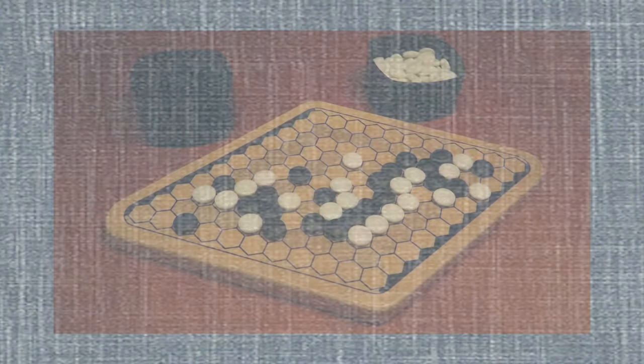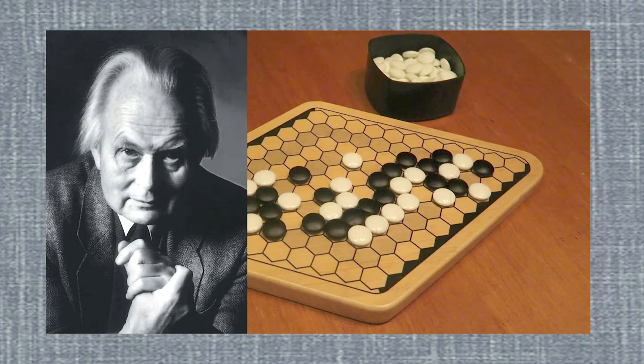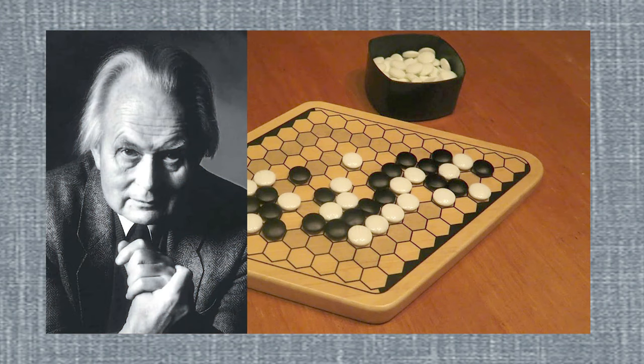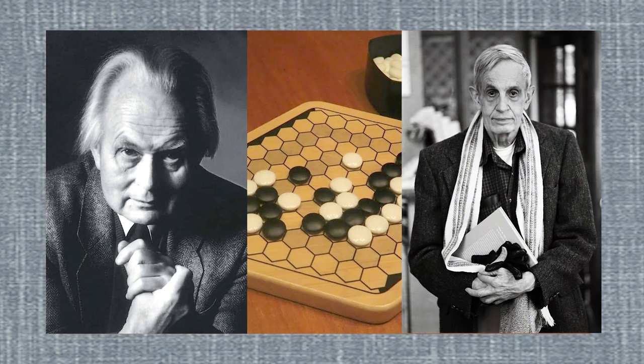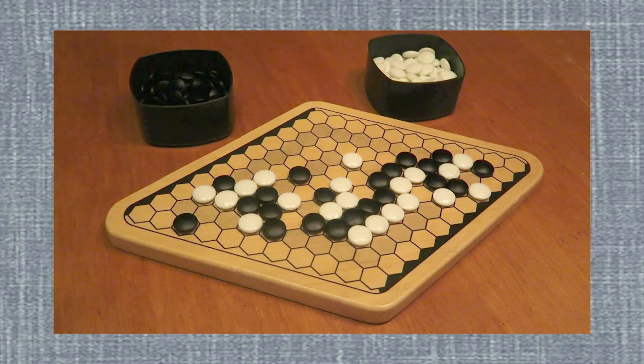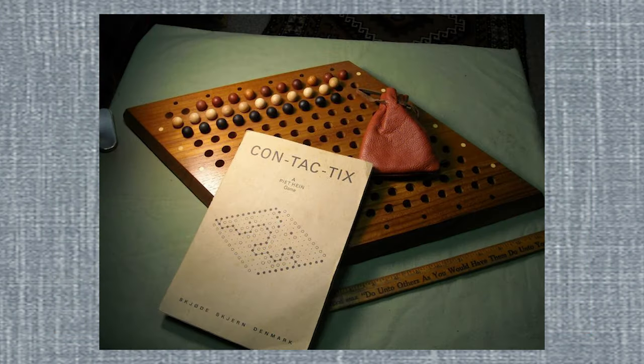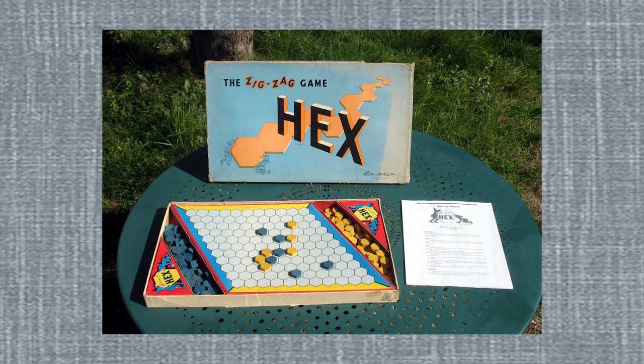Hex is a two-player strategy game in which players attempt to connect points on two sides of a rhombic board of hexagons. It was invented by Danish mathematician and poet Piet Hein in 1942. The identical game was independently invented by mathematician John Nash in 1947 at Princeton University. It was marketed in Denmark as Contactix, and Parker Brothers marketed a version called Hex in 1952. A book was written in excruciating detail about how Hex works and its winning and losing strategies. I'll probably do a video about Hex one of these days.